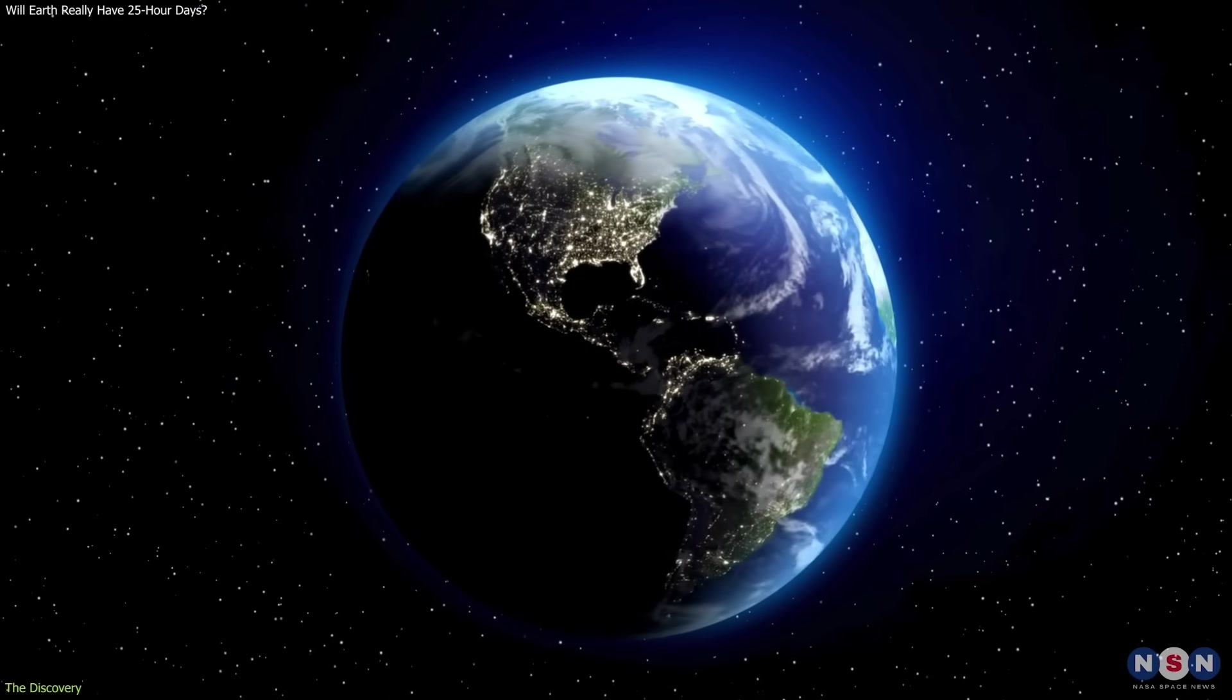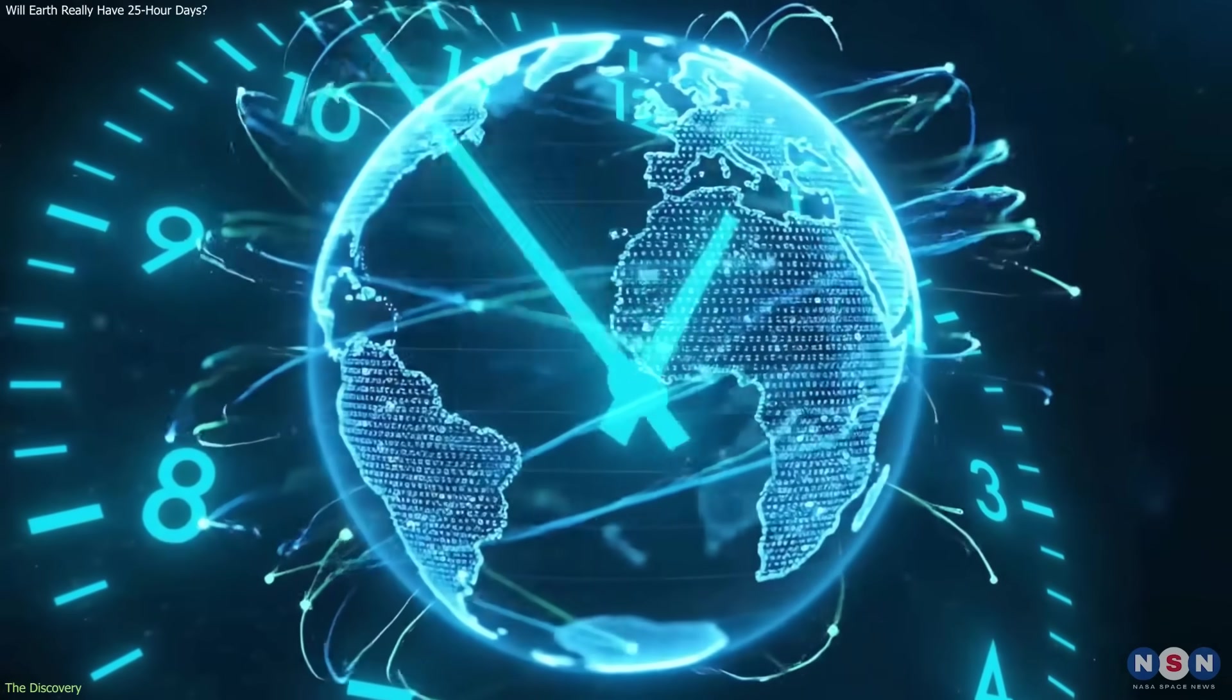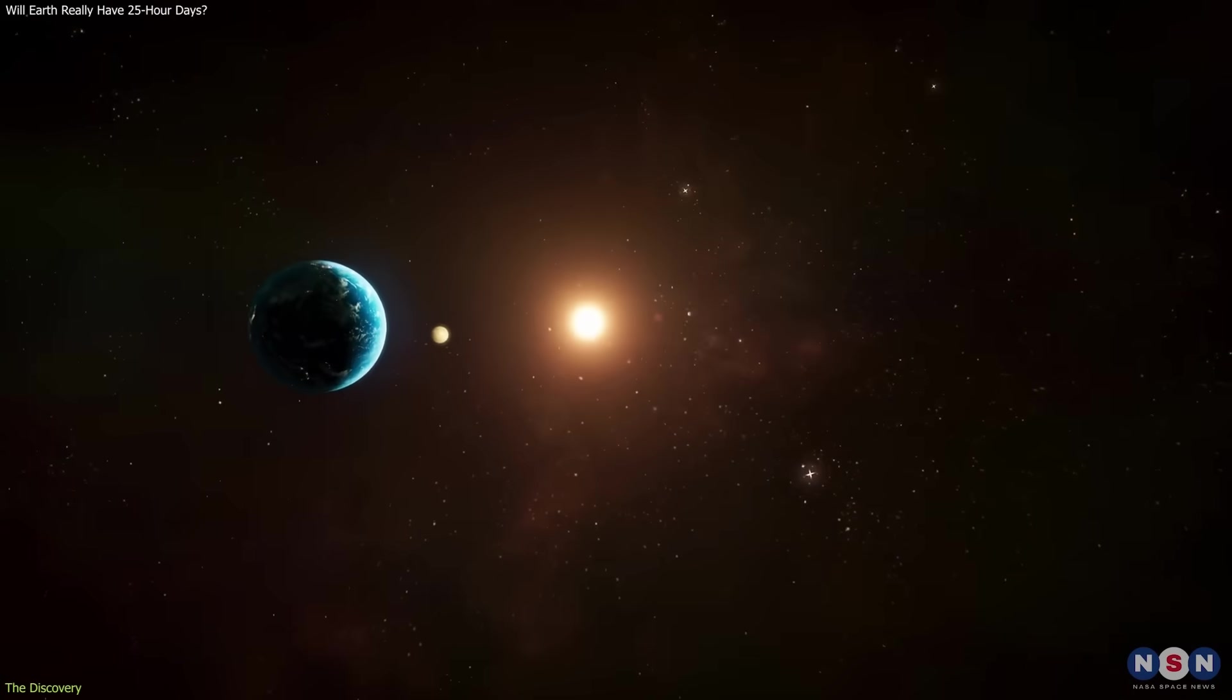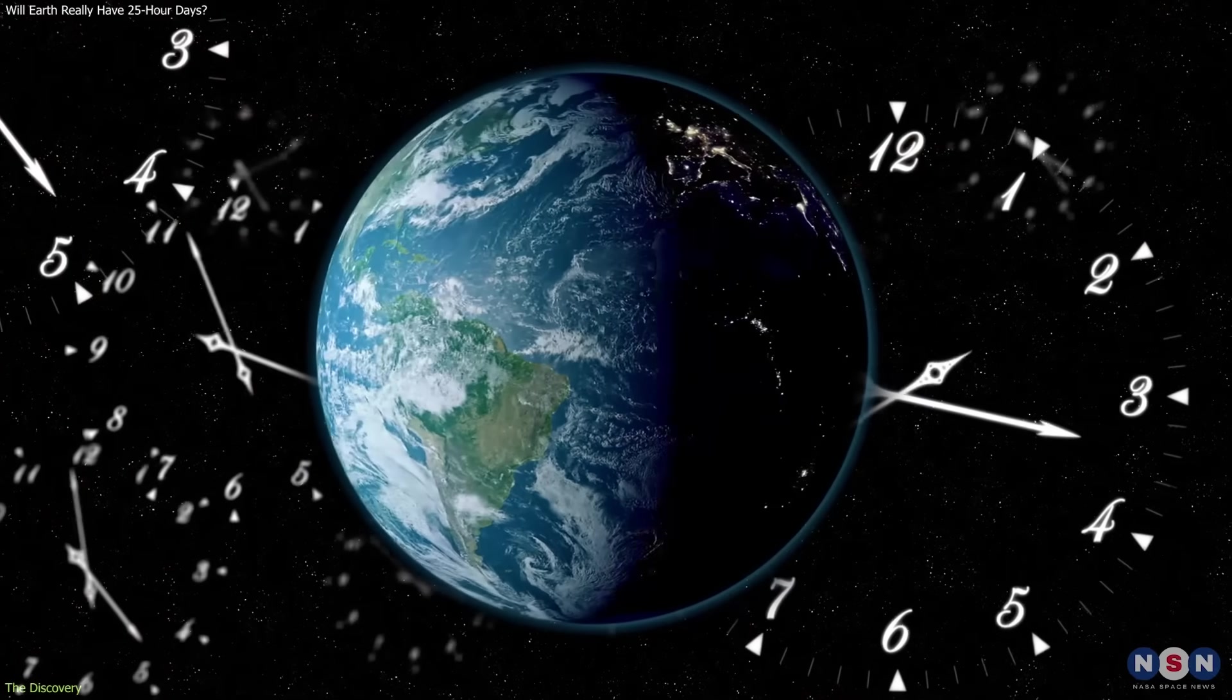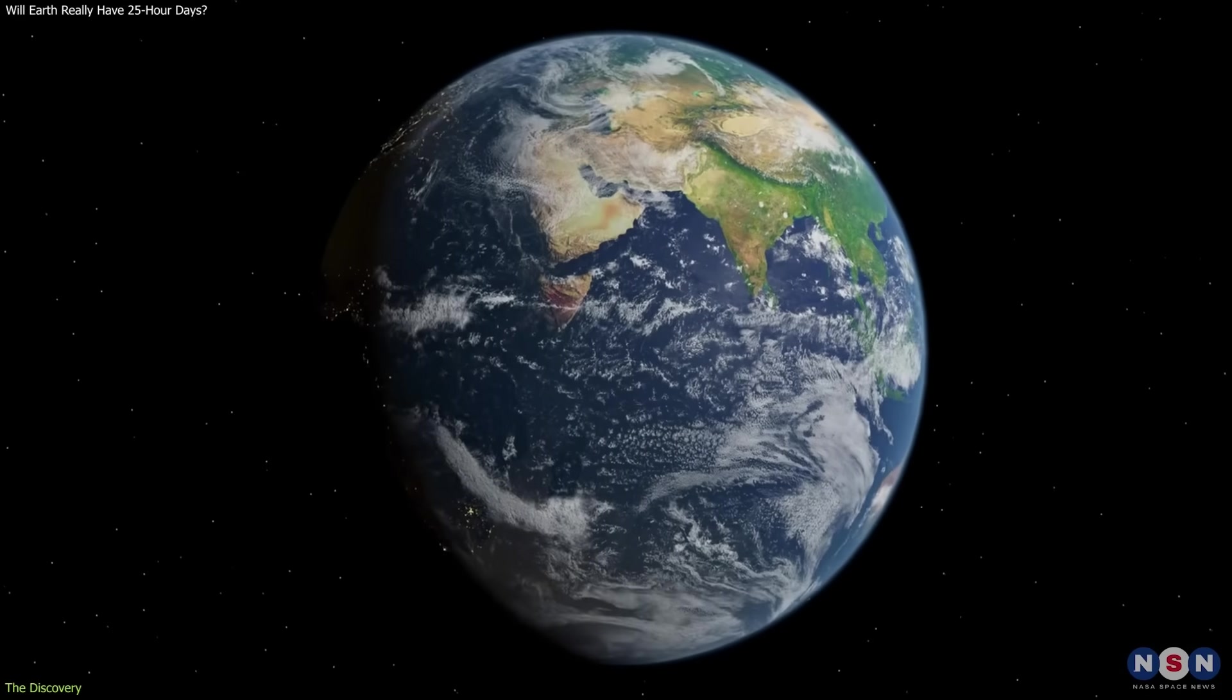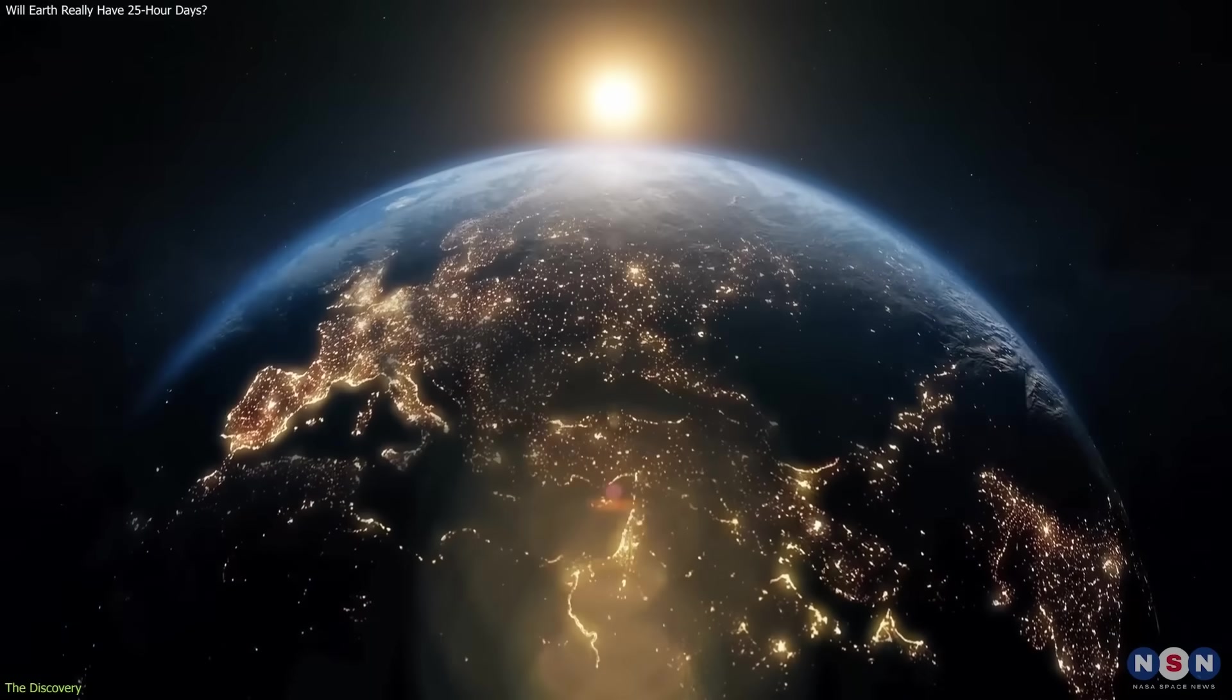Earth's rotation has never been perfectly constant. What has changed in recent decades is not the planet's behavior, but our ability to observe it with extreme precision. Scientists now track Earth's rotation continuously using atomic clocks, satellite laser ranging, and astronomical reference points far beyond the solar system. These tools allow changes in the length of a day to be measured down to milliseconds. When researchers talk about Earth's rotation slowing, they are referring to long-term averages, not a steady year-by-year decrease. In reality, the length of the day fluctuates constantly.